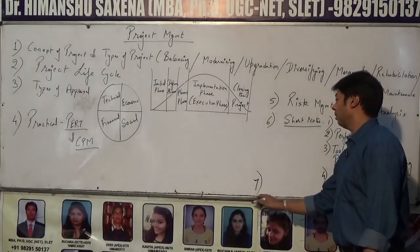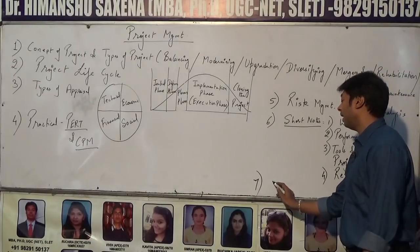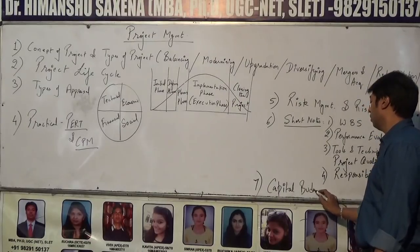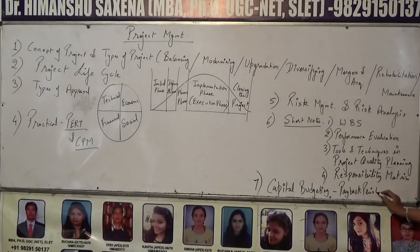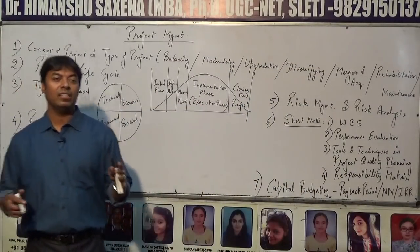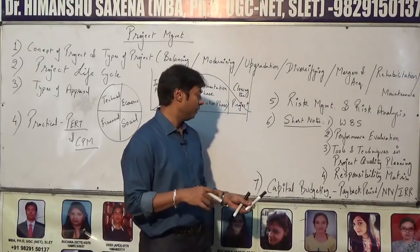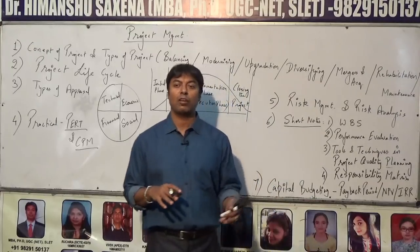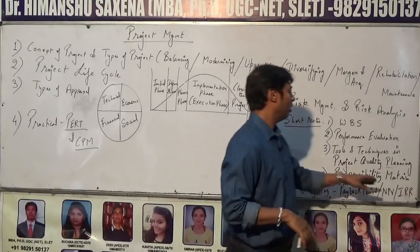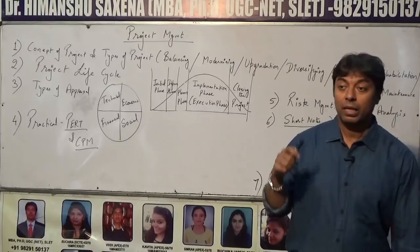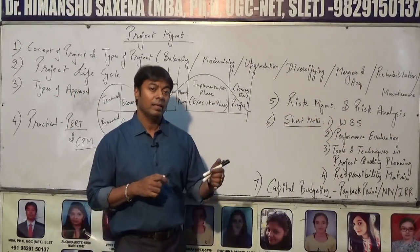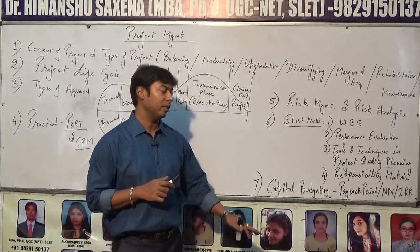Another important short note is the responsibility matrix. And finally, a very important practical on financial appraisal or capital budgeting, whereby you select or reject the project on the basis of payback period — the project with the lowest payback period is selected — or net present value, where the project with the highest NPV is selected, or a positive NPV for a single project. Projects with negative NPV are rejected. You also consider internal rate of return, selecting the project with the highest IRR.